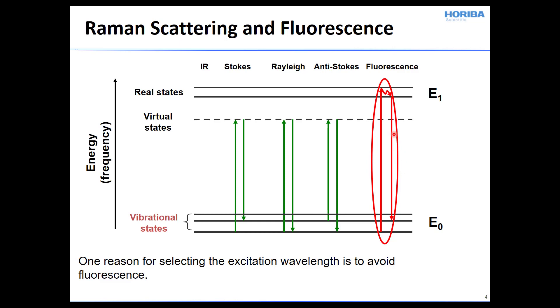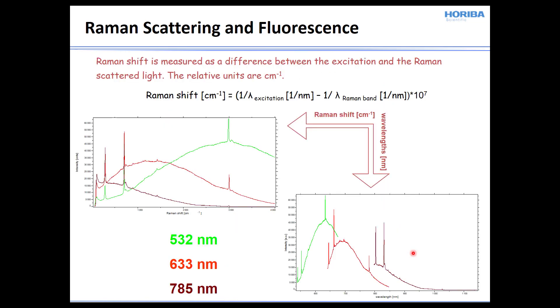that's a fluorescence photon, and then the electron drops back down to the ground electronic state. And now what you have is an emission that is competing, a fluorescence emission that's competing with the Raman scattering. And that is one of the reasons for selecting an excitation wavelength to avoid this kind of fluorescence. And so you want to avoid this kind of absorption and subsequent emission as a result.